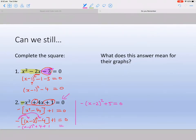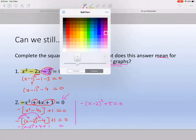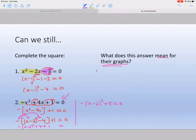Now the second part is, what does this answer mean for their graphs? Well, if you said their vertex, you'll be correct. So the vertex for number 1 will be the opposite sign of that for the x value, so that will be 1, and keep the sign for that, so minus 4. And for number 2, let's look at it.